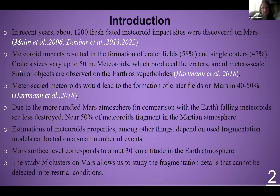In recent years, about 1,200 fresh dated material impact sites were discovered on Mars. They are crater fields and single clusters. Crater diameters vary from 1 meter due to camera resolution to almost 50 meters. Due to the more rarified Mars atmosphere in comparison with Earth, falling meteoroids are less destroyed. On Earth, meteoroids are usually observed during the short flight through the atmosphere, and fragments are found in rare cases.